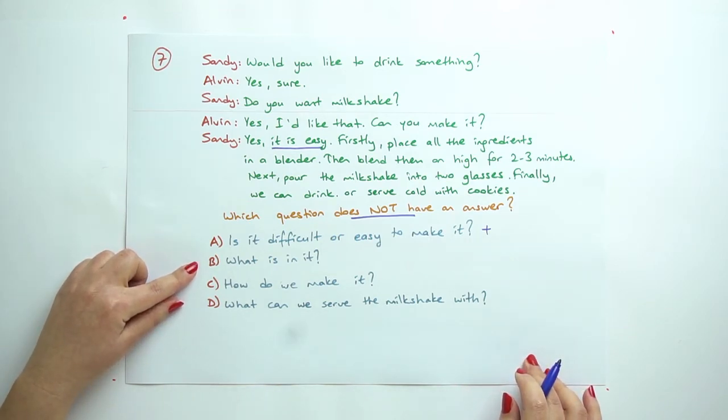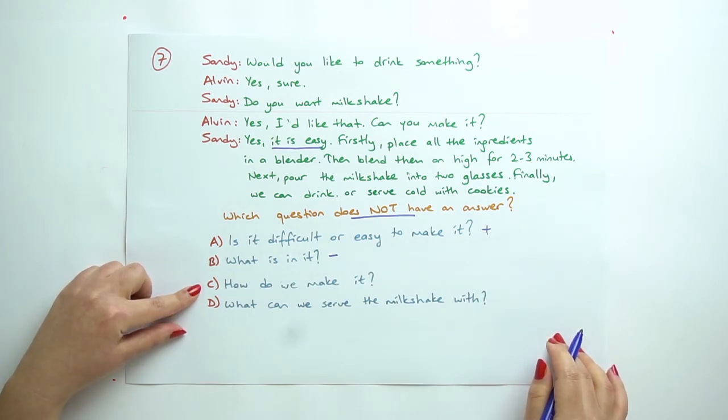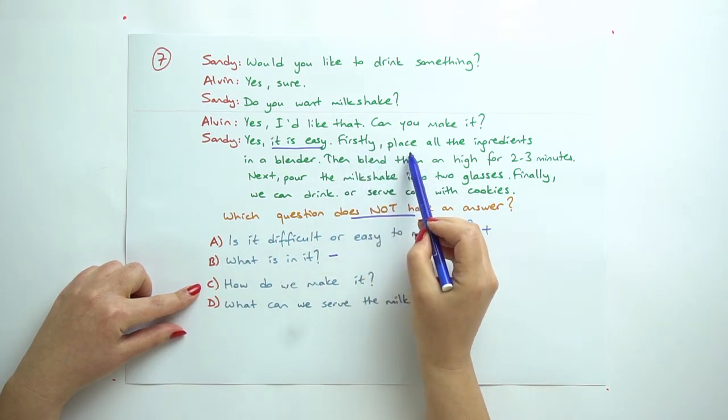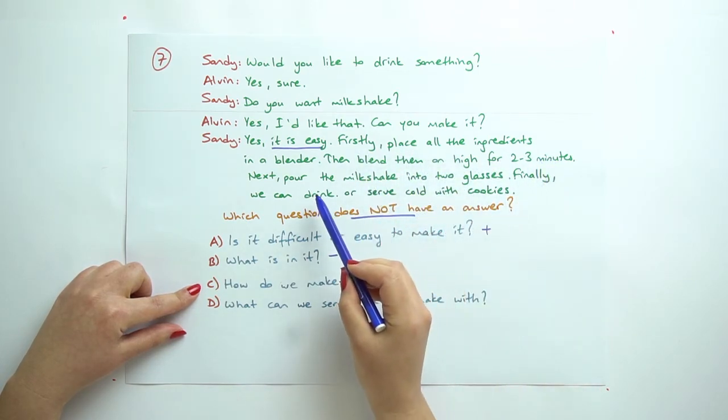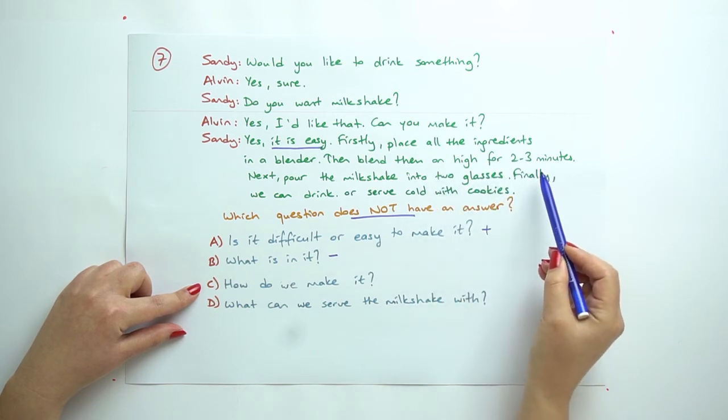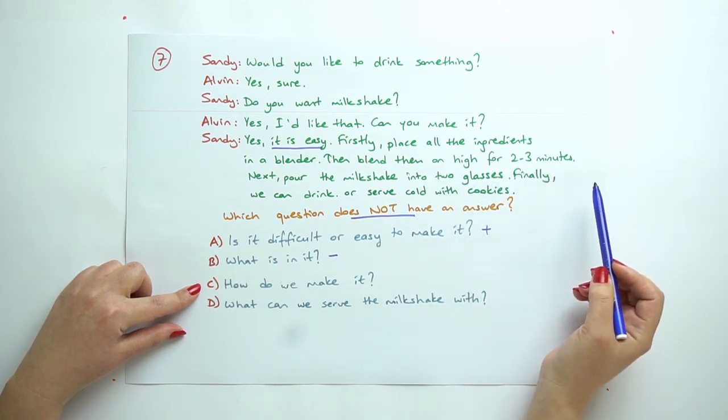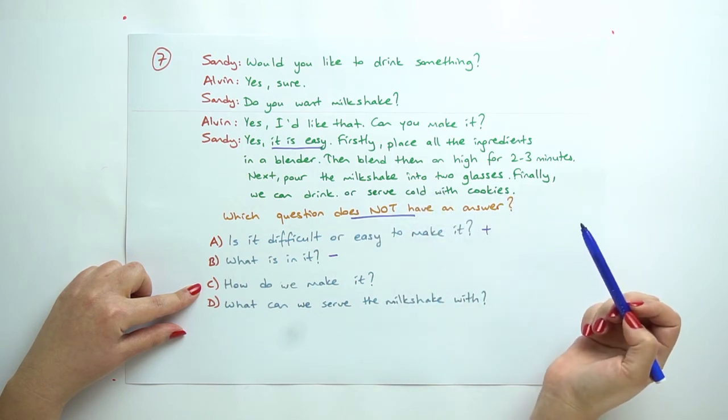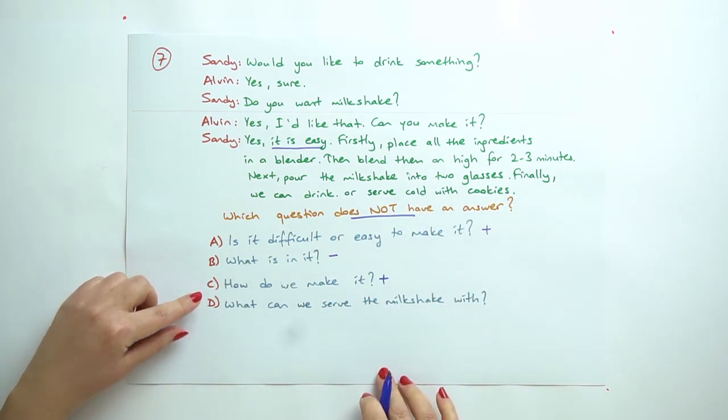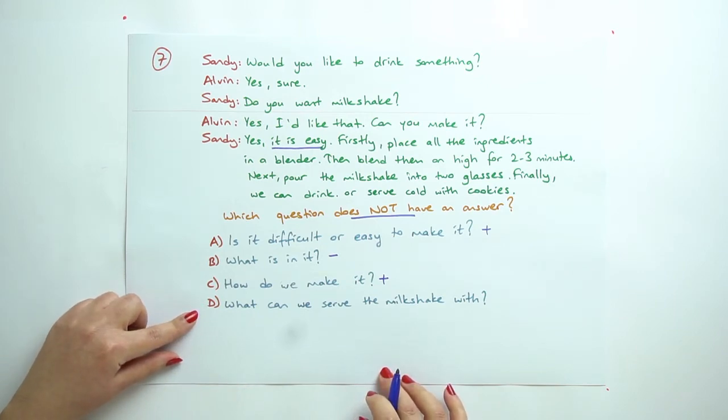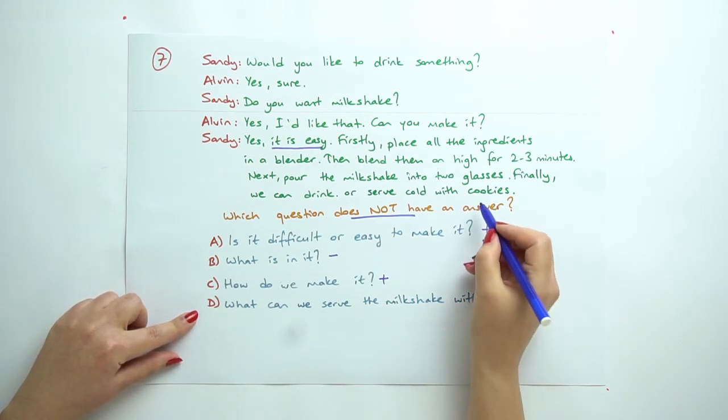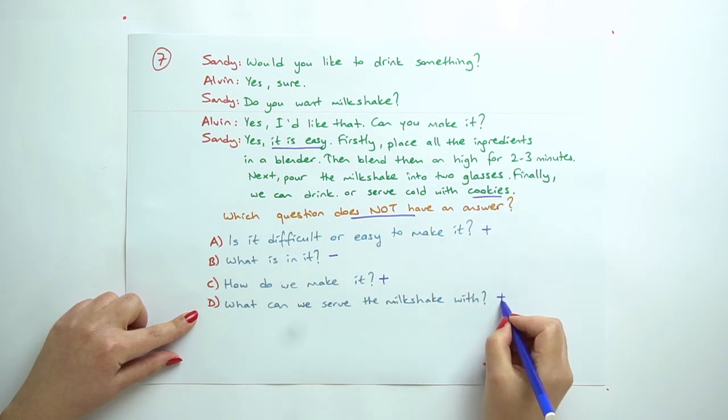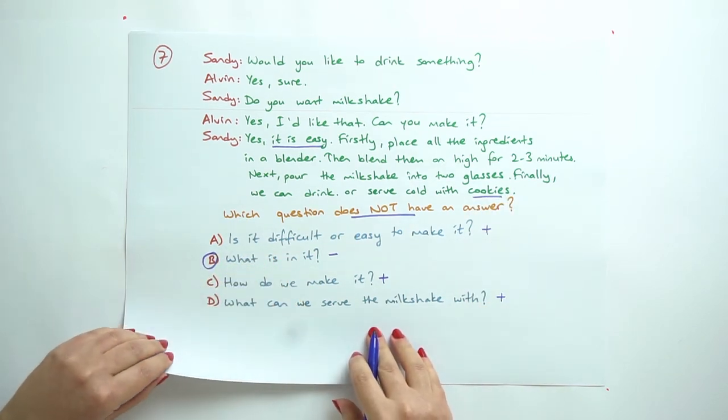No, we don't know. We only know milk. And how do we make it? So here are the process. First we place all the ingredients in a blender, then blend them on high for 2 or 3 minutes. Pour the milkshake into 2 glasses. So we have this one. And D: what can we serve with the milkshake? So with cookies. We have this one. And B does not have an answer.